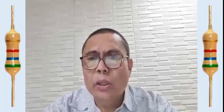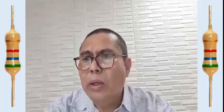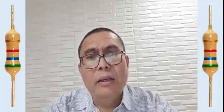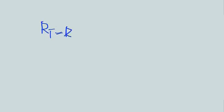In parallel connections, two or more resistors are connected across the same connection. In this method, the individual resistances are not added. For series connection, the formula is RT is equal to R1 plus R2 plus R3.